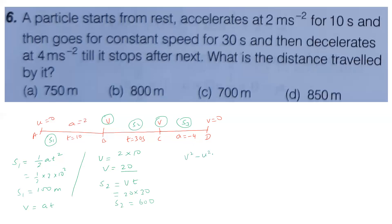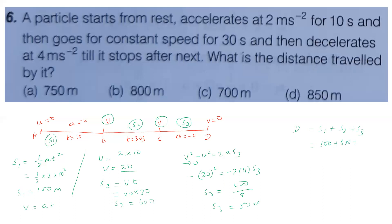Using v squared minus u squared equals 2a·S3: 0 minus 400 equals 2 into minus 4 into S3, so minus 400 equals minus 8 S3, giving S3 equals 50 meter. Total distance equals S1 plus S2 plus S3 equals 100 plus 600 plus 50 equals 750 meter. First option is correct.